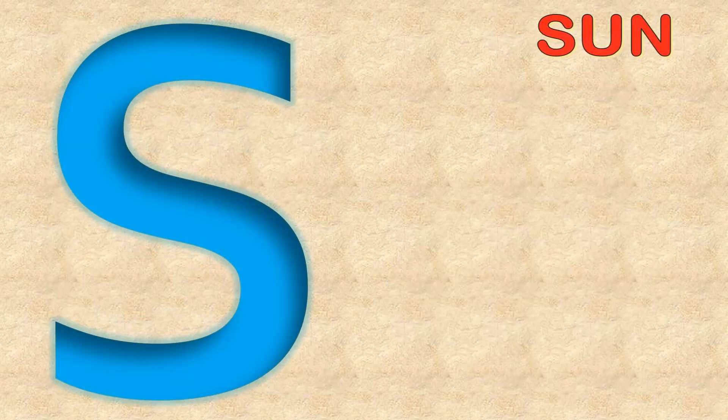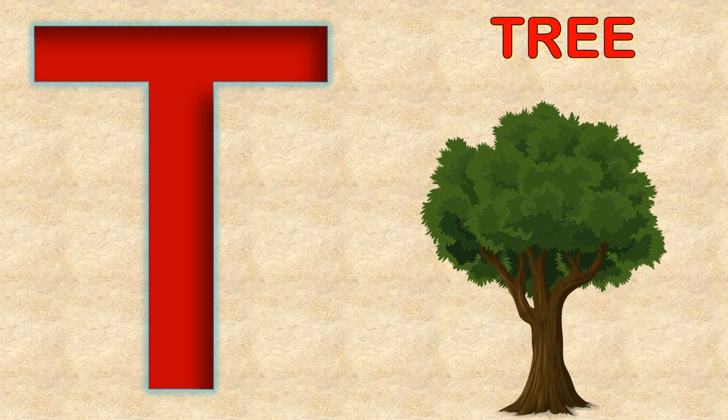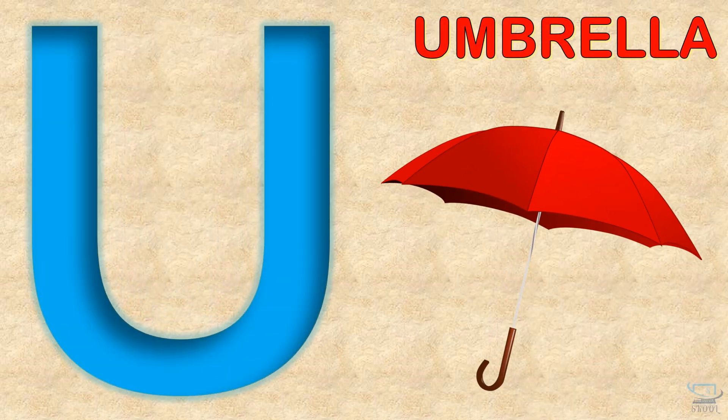S for sun, T for tree, U for umbrella, V for van.